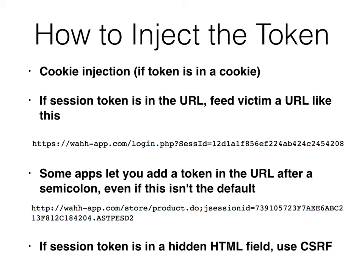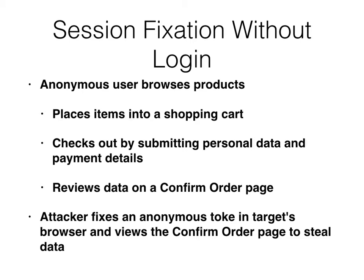If you can't inject a cookie, you can put the token in a cookie. If the token is in the URL, just get them to click on a URL that contains the session ID you chose — a valid session ID for your session — and now they'll log in with your session token. Some apps will let you add a token in the URL after a semicolon, which is kind of rude but not standard syntax. If you have a token in a hidden HTML field, you can inject it if you're vulnerable to cross-site request forgery.